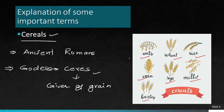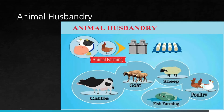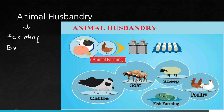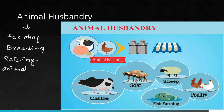In cereals we include oats, wheat, rice, corn, rye, millet and barley. So this is the first plant product which we eat. Then the second thing we are going to do in detail is animal husbandry. Animal husbandry is the agricultural practice of feeding, breeding and raising animal stock.